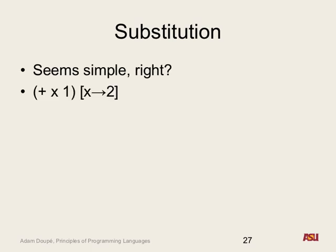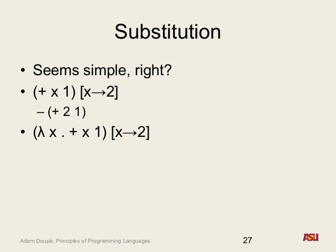So the substitution operator is the brackets, and we're replacing x with the lambda expression 2. We're replacing all free x's with the lambda expression 2. Which means when we're trying to substitute x for lambda expression 2 in the expression lambda x dot plus x 1, is this going to change anything? No, because this is a bound x. So our substitution operator is not going to change that.